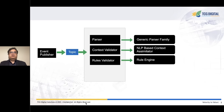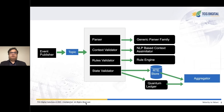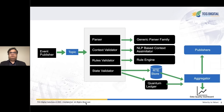Events are then stored into a DynamoDB database which serves as the application database. Transactions are immutably stored in a blockchain-backed quantum laser database. Message aggregators then query the databases to create reports and real-time dashboards. The messages are defined, curated, and published to be consumed by downstream systems.